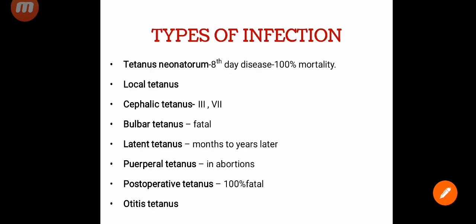There are basically eight types of tetanus. Tetanus neonatorum is seen in neonates, also called the 8th day disease because it develops between the 6th and 8th day after birth, with almost 100% mortality. Then there is local tetanus, cephalic tetanus — where the 3rd cranial nerve (oculomotor) and 7th cranial nerve (facial nerve) are affected. Then bulbar tetanus, latent tetanus, puerperal tetanus, postoperative tetanus — which is 100% fatal — and otitis tetanus.